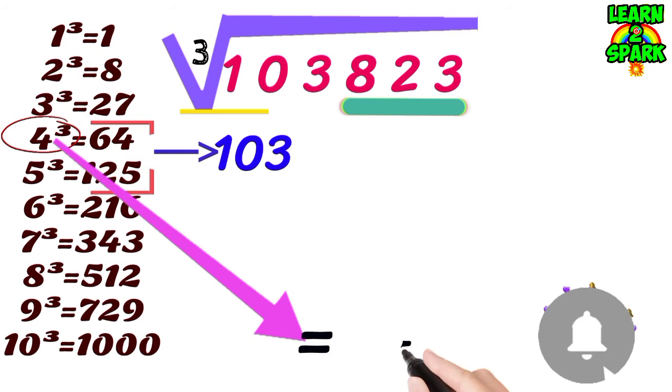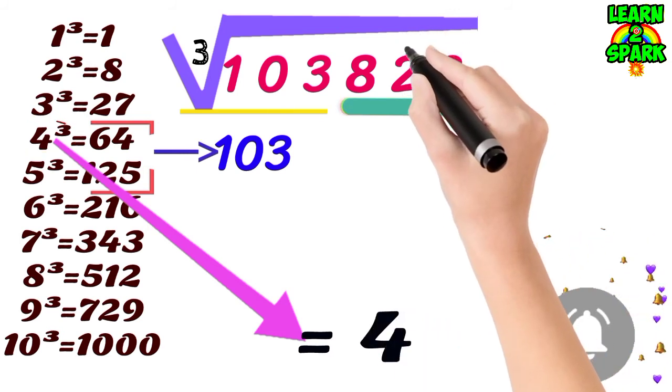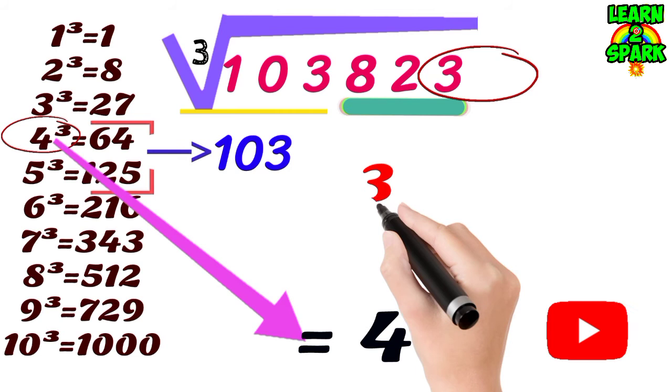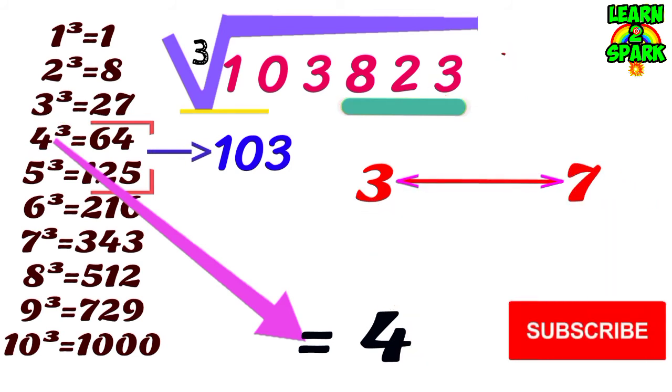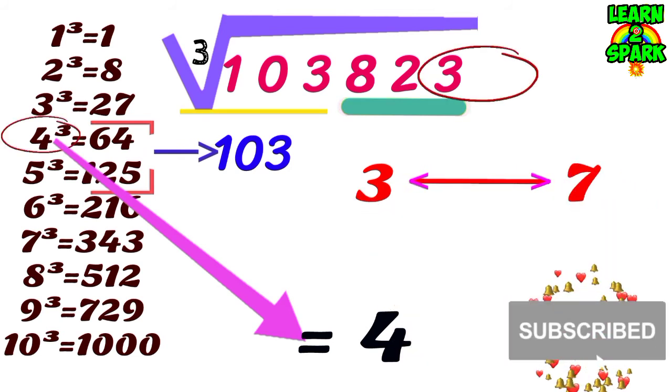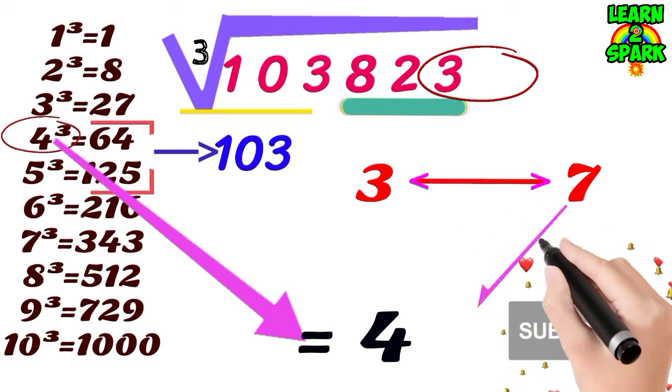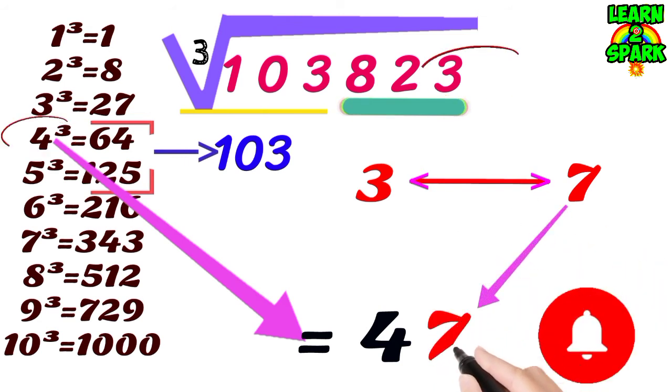Bring down 4 for your final answer and consider the units place, that is 3. As I mentioned earlier, 3 should be replaced with 7. Bring down 7 for your answer and your final answer is 47.